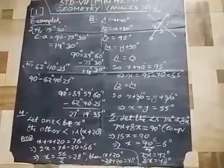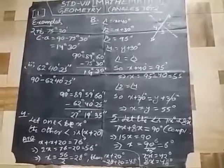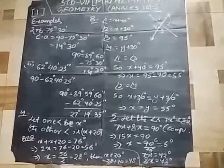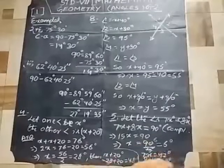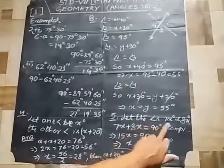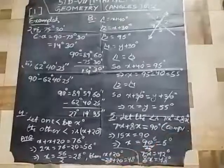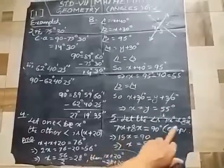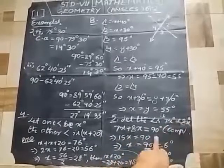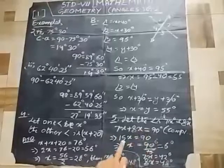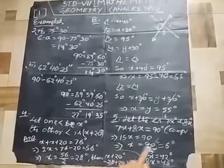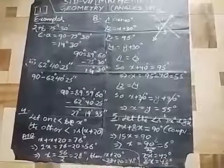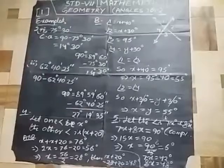Example 5: If two complementary angles are in the ratio 7:8, find the angles. Let the angles be 7x degrees and 8x degrees. Since they are complementary, their sum equals 90 degrees: 7x plus 8x equals 90, so 15x equals 90, giving x equals 6 degrees. Therefore, 7x equals 42 degrees and 8x equals 48 degrees. Thank you.